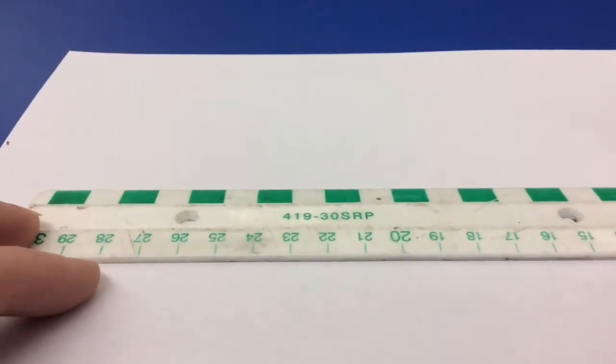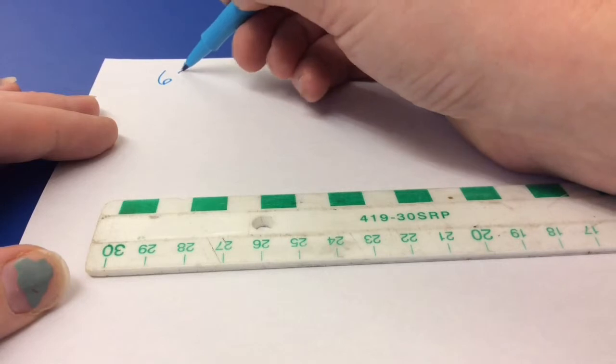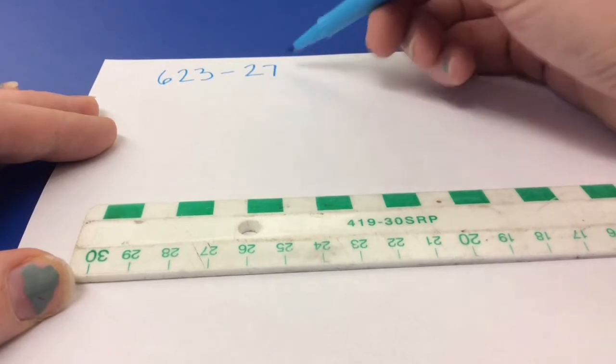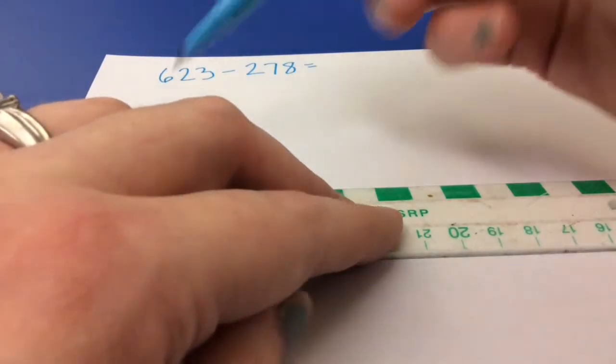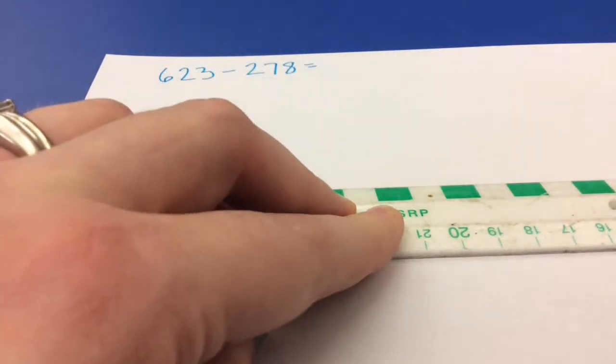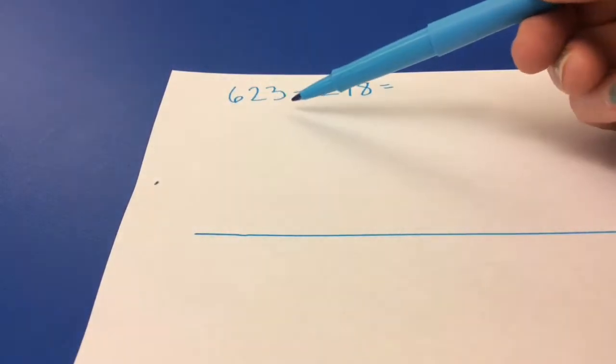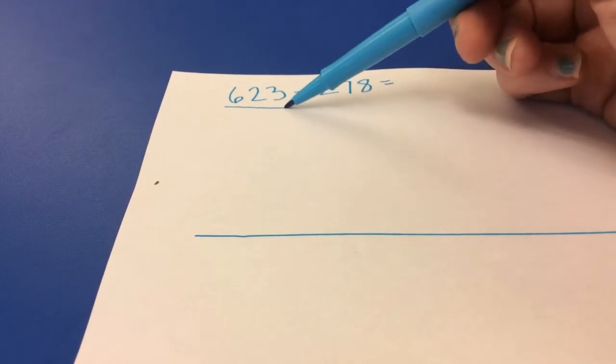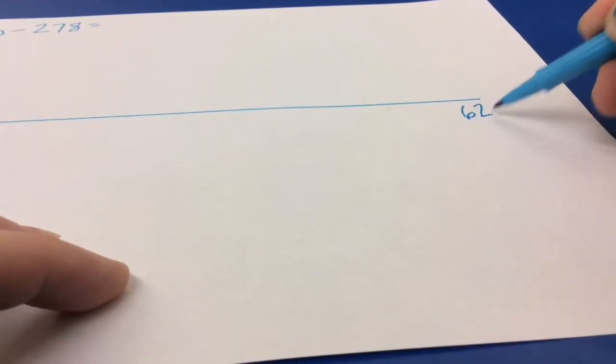Okay, so now we're going to do another question with an open number line. We're going to look at 623 minus 278. Step number 1 is draw the number line. And go back and look at my question to determine which of the numbers is larger. The larger number is first in a subtraction question. So it's going to go at the end of our number line, at 623.